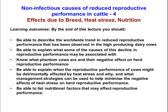The learning objectives for this section are for you, by the end of this section, to be able to describe the worldwide trend in reduced reproductive performance observed in high-producing dairy cows, and to explain what some of the causes of this decline may be associated with. We'll introduce the concept of phantom cows and how they have a negative effect on herd reproductive performance. You should also be able to explain when reproductive performance might be detrimentally affected by heat stress and why, and what management strategies you can use to minimise the negative effects of heat stress. Finally, we'll take a quick look at nutritional factors that can affect pregnancy rates.